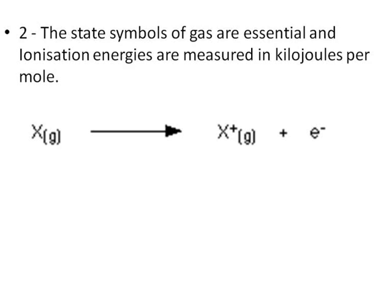Ionization energies are measured in kilojoules per mole. They vary in size from approximately 380, which is very low, up to 2400, which is very high.